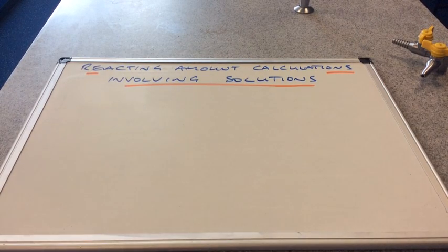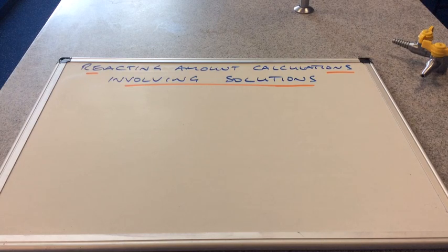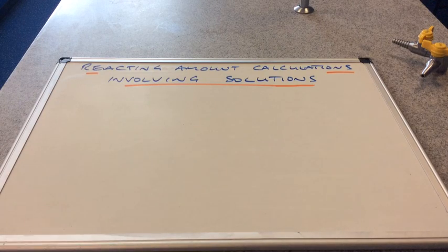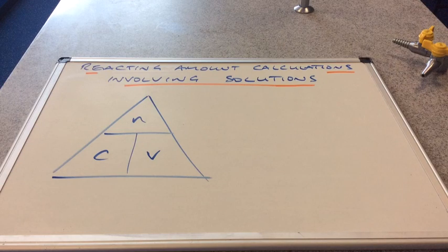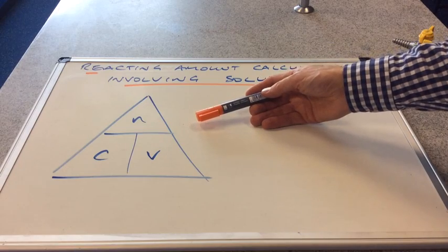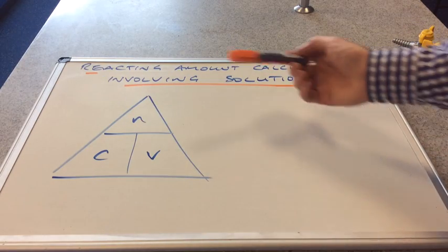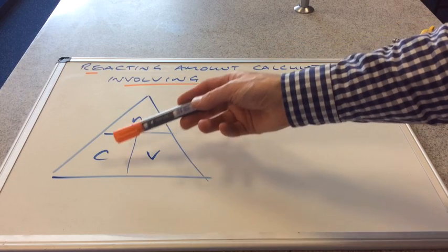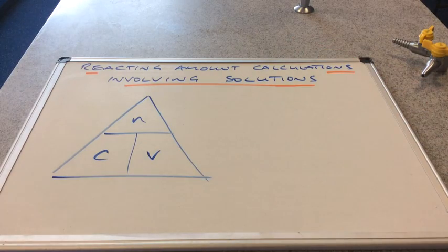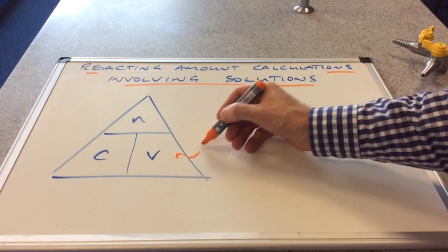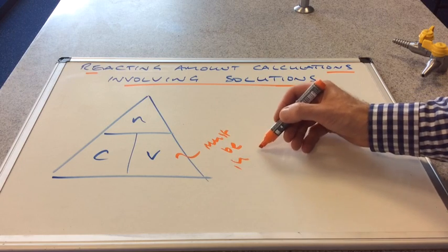In this video I'm going to look at reacting amount calculations that involve solutions. These are typically titration type calculations. I've got a separate video about how to carry out a titration, but in this video we're just going to concentrate on the actual calculations themselves. Like the mass video and the gases video, we start off with the relevant formula triangle. The one for solutions has moles at the top, with concentration and volume at the bottom. The volume must be in decimetres cubed.